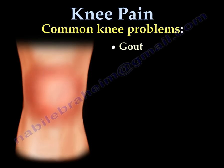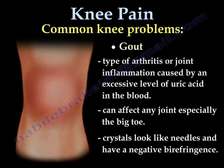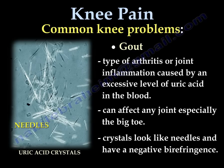Gout is an inflammatory arthritis caused by excessive levels of uric acid. It can affect any joint in the body, especially the big toe. Crystals appear needle-like and have a negative birefringence.